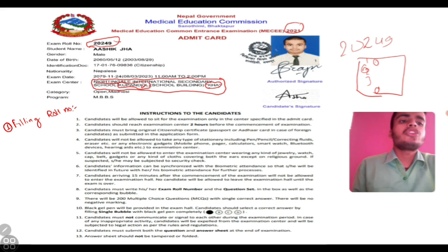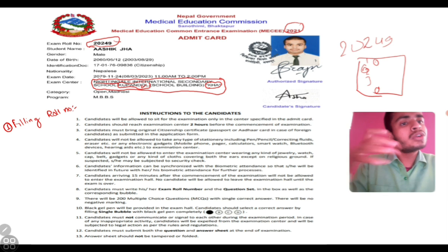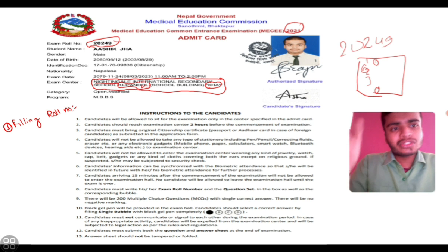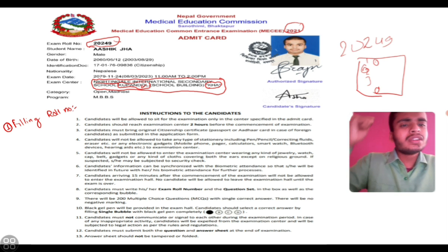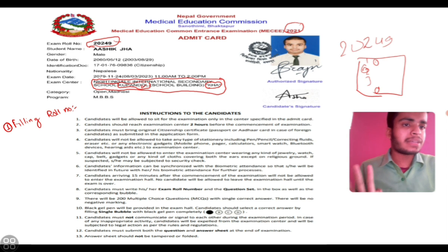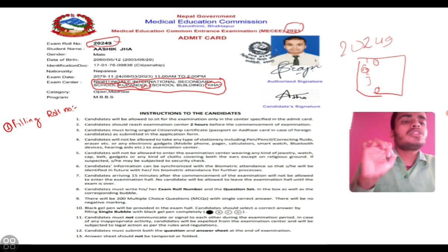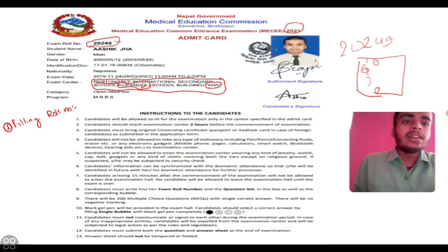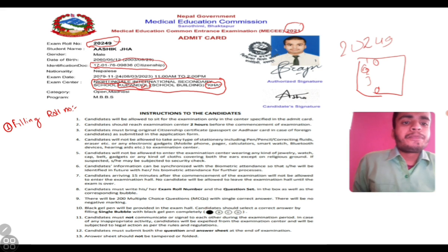One more thing you must remember from the admit card is the 'kakha' (block). This refers to the block of the school — A, B, C, D — which is the administrative block for that exam day. For example, if you are at Night Angle School, you need to find which block you are in. Look for signage at the school to find your block. The block information on your admit card signifies your exam block. After the citizenship number section, confirm your block details.